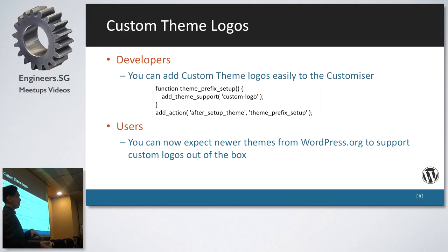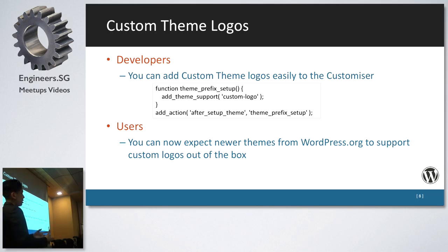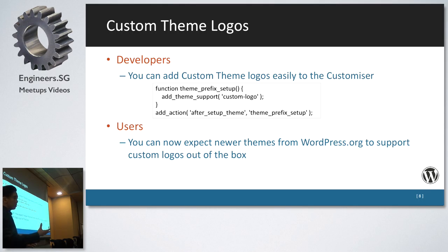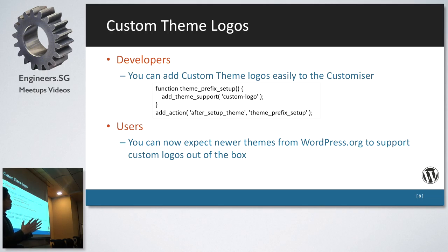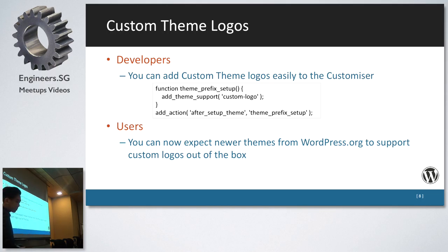Custom theme logos became part of core. If you were installing themes and uploading a logo, now core supports it as well, so it's no longer theme dependent. WordPress.org themes will support custom logos out of the box, so you won't end up downloading a theme that requires the pro version to upload a custom logo. Also, if you switch themes in the future, the database still saves your logo — it's core specific now.